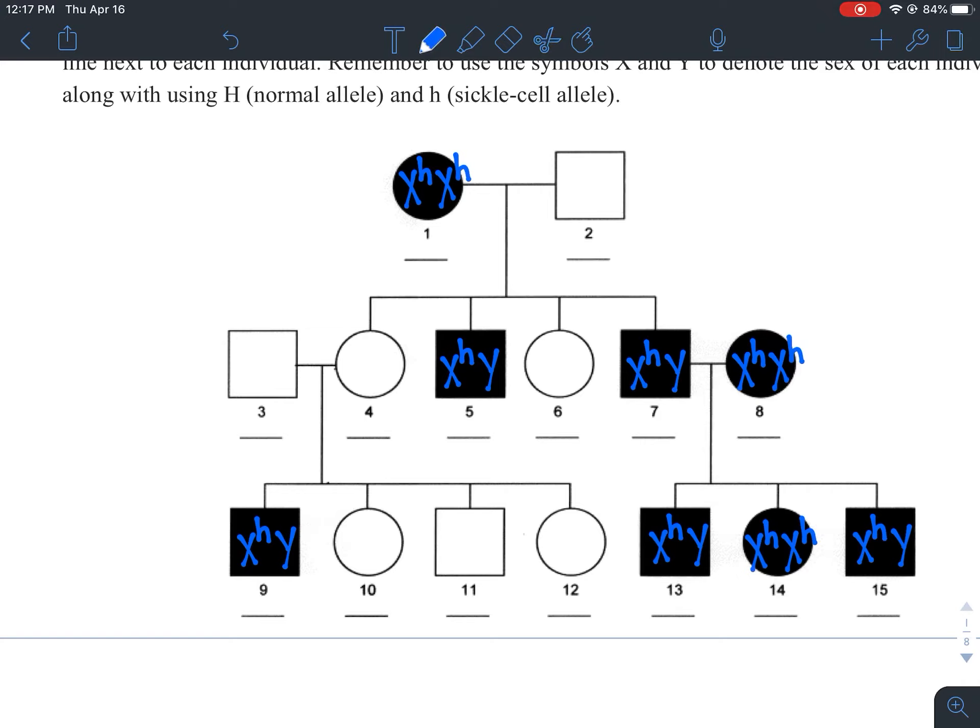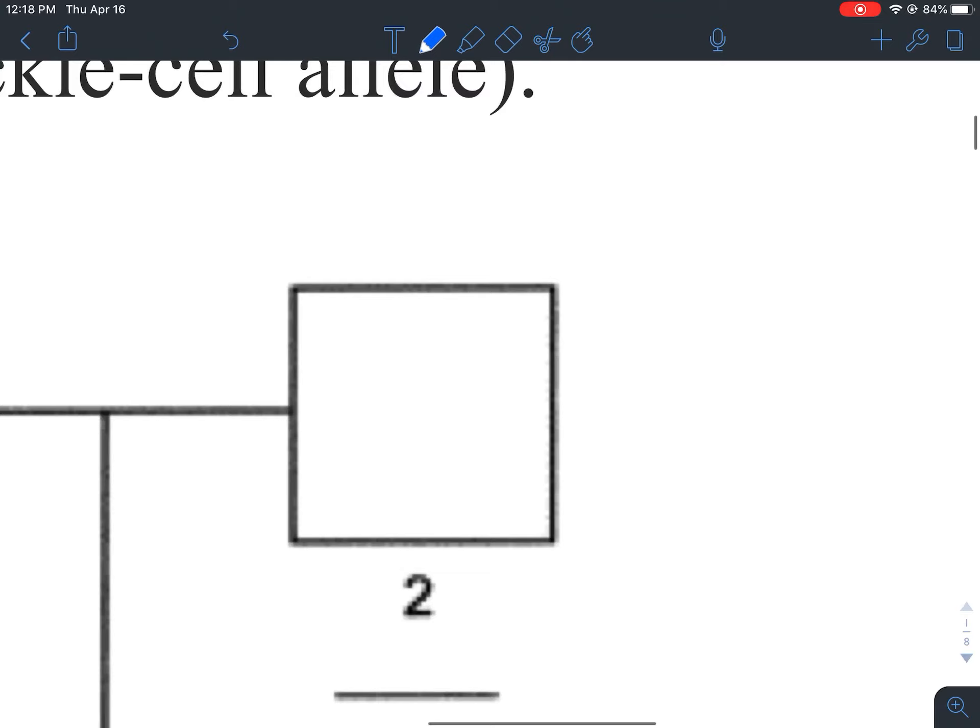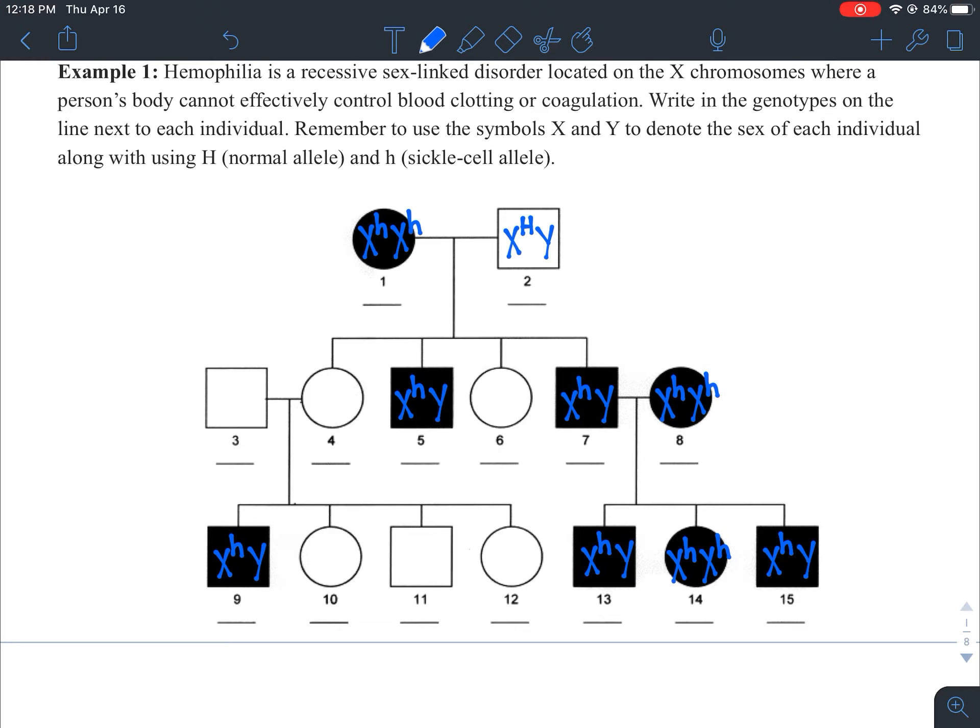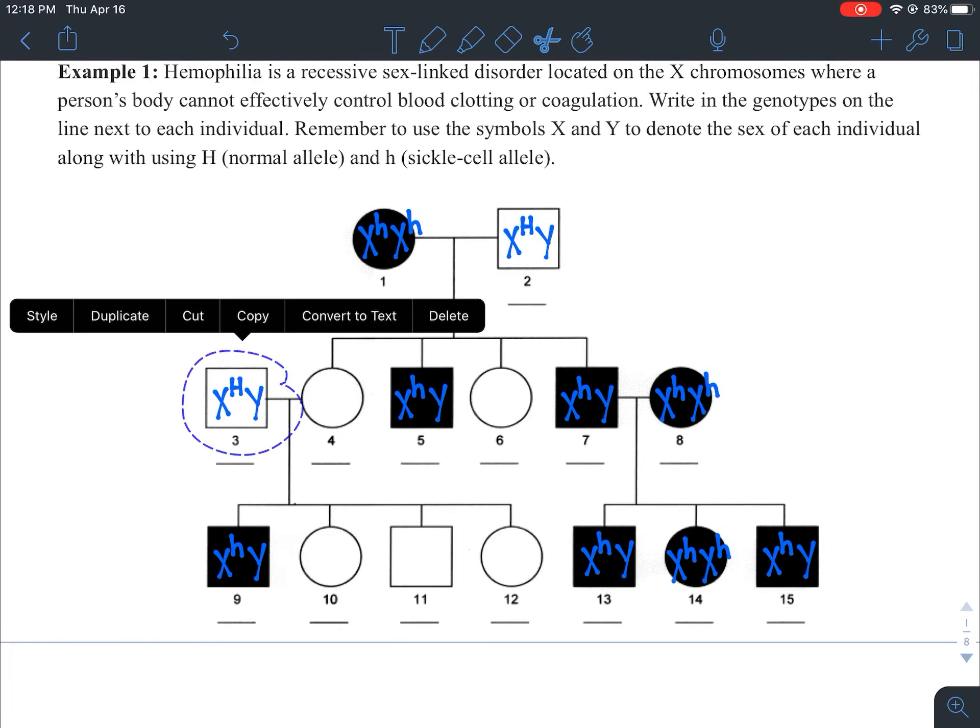The next one that I like to do is to look at the male who is not affected because, again, we can automatically know what their genotype is. So this dad did not have the allele for hemophilia, and so we know that he is X capital H Y. And again, I can go through and just fill that out for all of the other males that look the exact same.